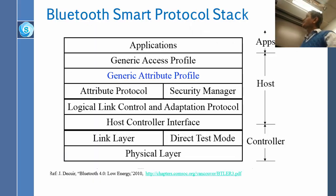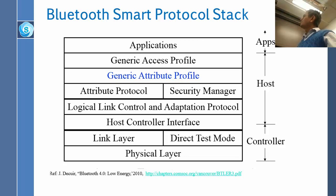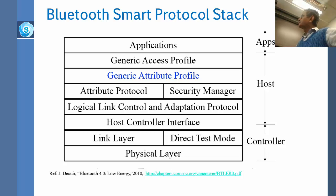The protocol stack has totally changed compared to the previous one where we had RF comm. Here there are actually three layers: one part is for control, another part we can call host, and finally application. In the control layer there are two-and-a-half layers, because half of the host controller interface belongs to control and the other half belongs to the host. Basically you have the link layer, the physical layer, and the direct test mode. The link layer is how you connect, and the host controller interface is the software that makes it independent of the chip, and then you have the logical link controller.